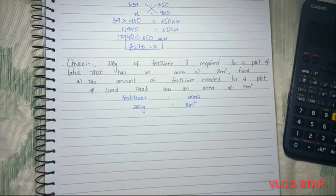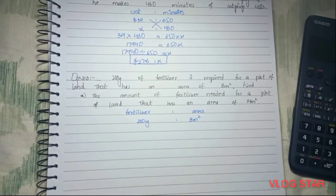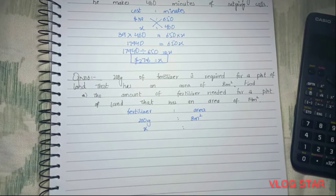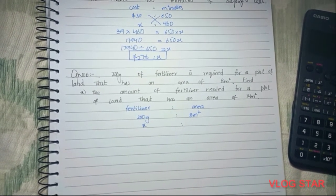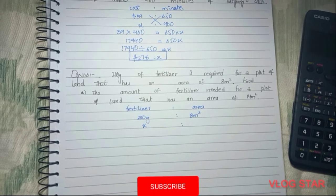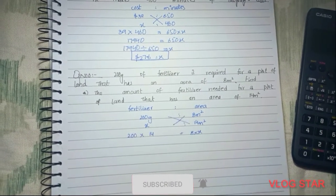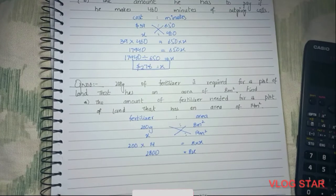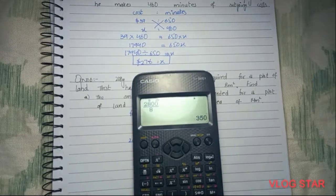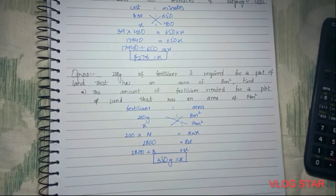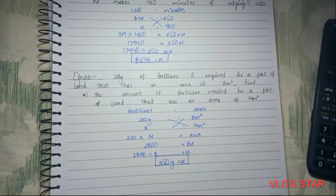For part a, the amount of fertilizer needed is unknown, so we consider it as x. The ratio is x grams to 14 meters squared. We cross multiply, then multiply and divide accordingly. The value of x is 350 grams, which means 350 grams of fertilizer is required.